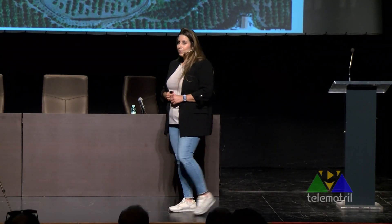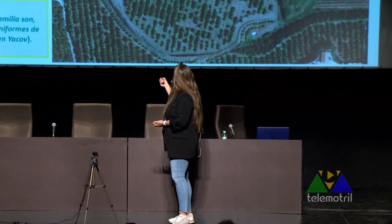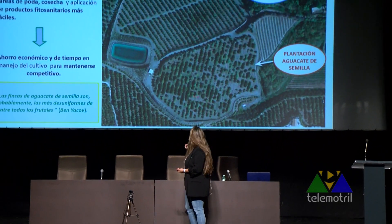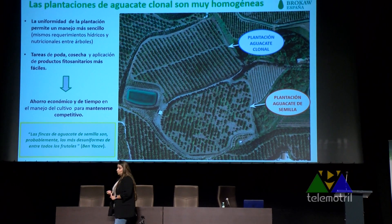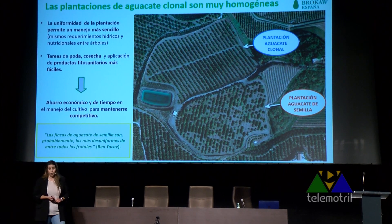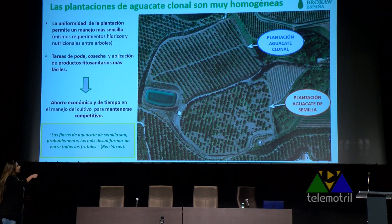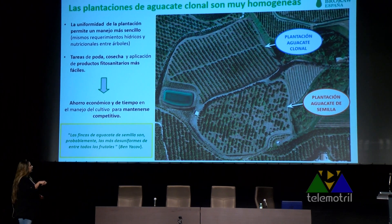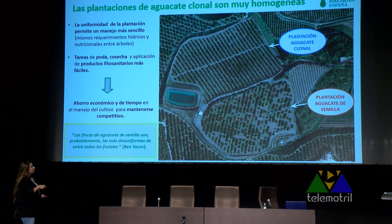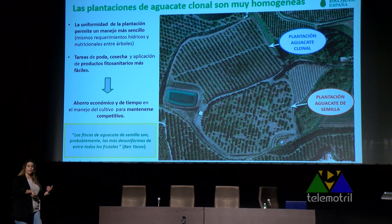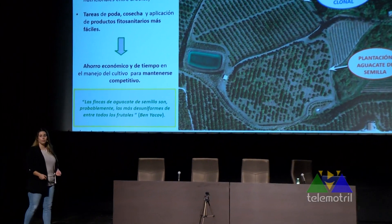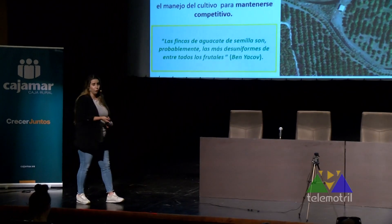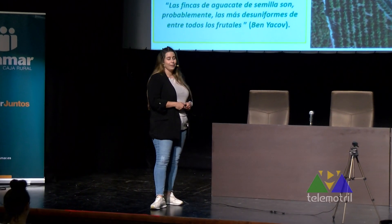Como una imagen vale más que mil palabras, aquí tenemos la diferencia entre una finca de árboles clonales y una finca de árboles de semilla perteneciente al mismo agricultor, con árboles plantados en el mismo año. El aguacate clonal muestra una finca muy homogénea cuyo manejo será mucho más sencillo. En cambio, la finca de aguacate semilla muestra árboles más pequeños, árboles más grandes, más faltas, árboles cloróticos: un árbol tiene más necesidades de hierro, otro árbol tiene menos necesidades. El manejo es una pesadilla, mucho más complicado. Por lo tanto, ahorro de mano de obra, de tiempo y de disgustos.